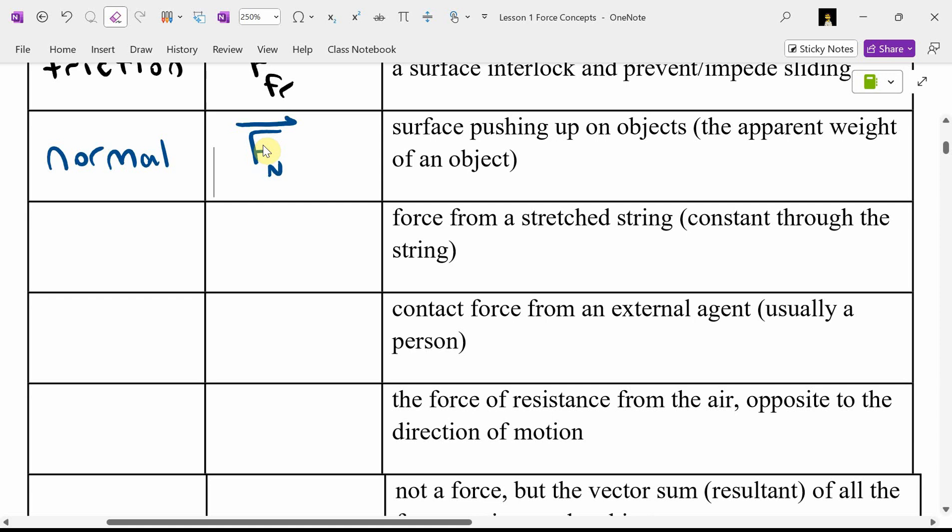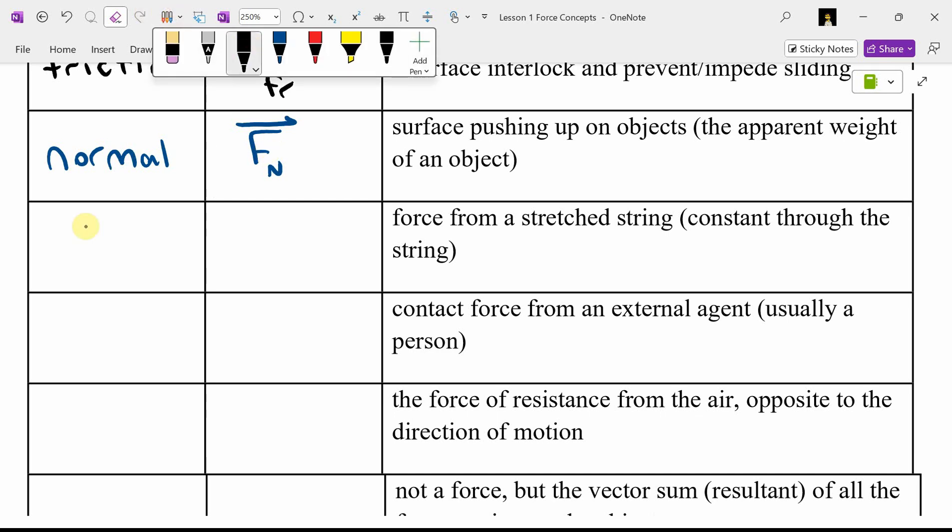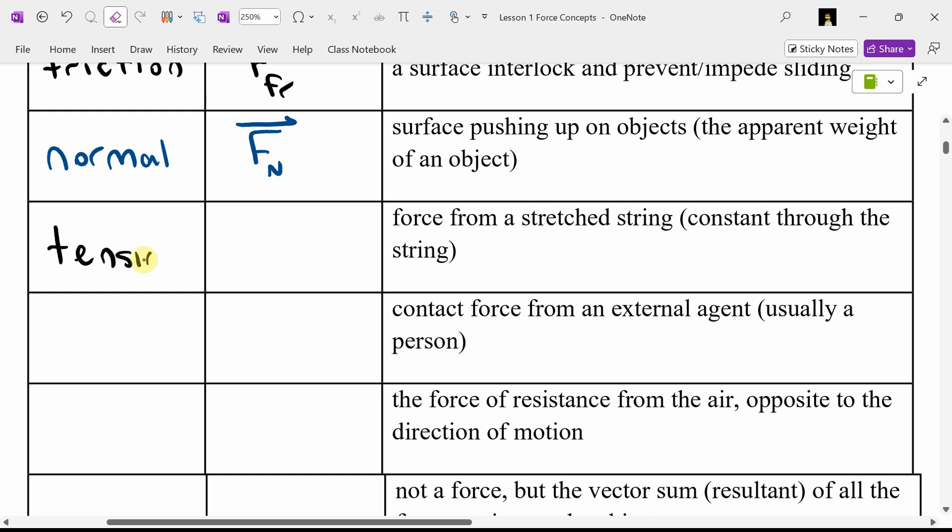And I used FN. Some textbooks will use capital N, but we already have capital N for Newtons, capital N for North. So I use F with a subscripted capital N for normal force. What name did we give to the force from a stretched spring? It was constant throughout the entire spring or rope or cable. I used a capital T.